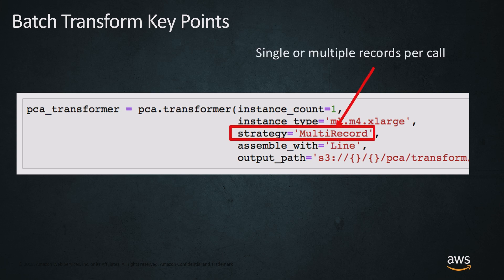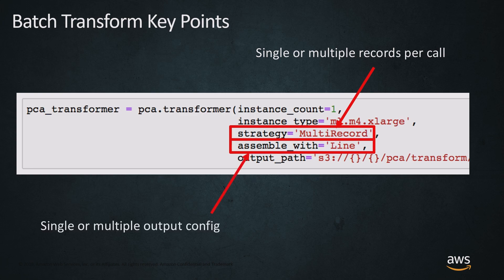You'll have a couple of other things too. The strategy here is multi-record, so that's either single or multiple records per call. There's also an assembler for the output — in this case it's assemble with line, which is again single or multiple output config.